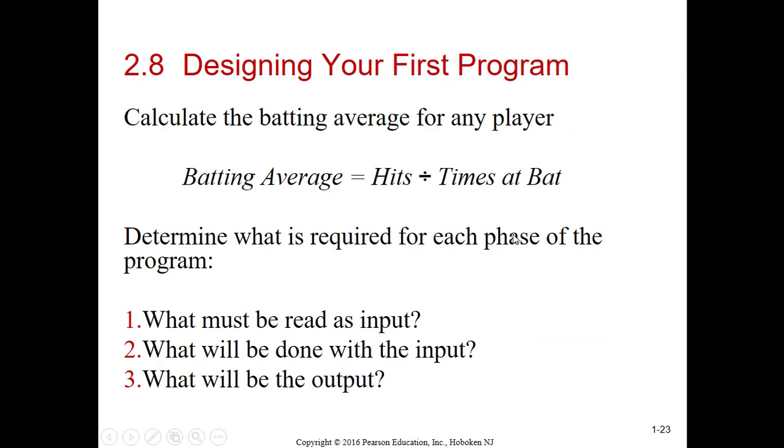Designing your first program. They want you to calculate the batting average for any player, and they give you the algorithm: batting average equals hits divided by times at bat. You have to determine what is required for each phase of your program. You must determine what your input is, what must be done with it, and what your output is. If you get your input, and most of these examples will tell you exactly what your input is, and they'll tell you what they want outputted. So you take your input, you look at your output. If it's not on your input, but they want it on your output, then you've got to calculate it.